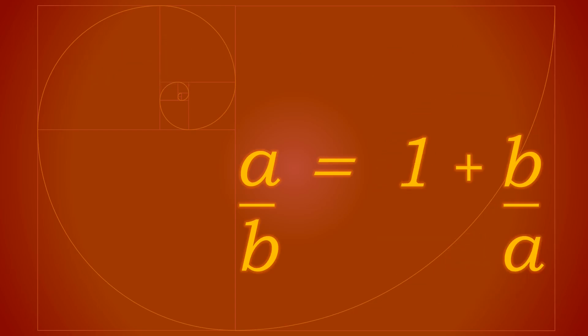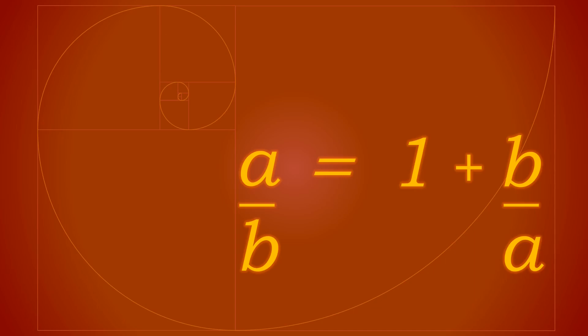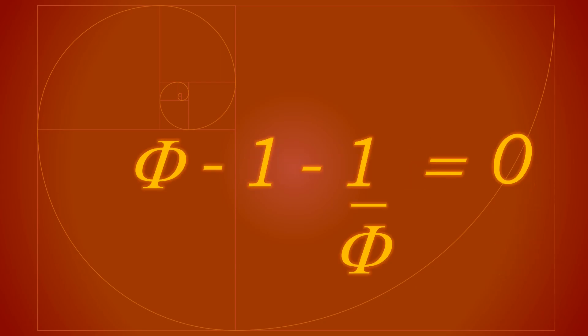Simplify the fraction on the right and you get a over b equals one plus b over a. If you substitute a over b for phi and b over a for one over phi, you can bring all of it to one side and leave zero on the other.